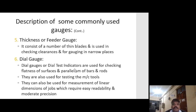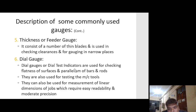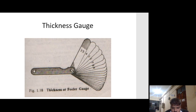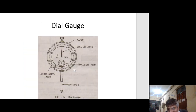Thickness or feeler gauge consists of a number of thin blades and is used in checking clearances and gauging in narrow places. Dial gauge or dial test indicator is used for checking the flatness of a surface and parallelism of bars and rods. They are also used for testing machine tools and for measurement of linear dimensions requiring easy readability and moderate precision. The spindle's reciprocating motion gets converted into the radial motion of the bigger arm and smaller arm.